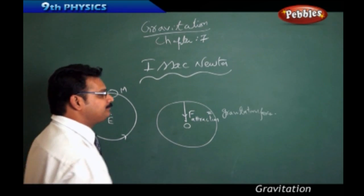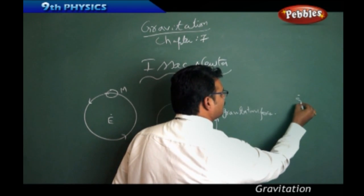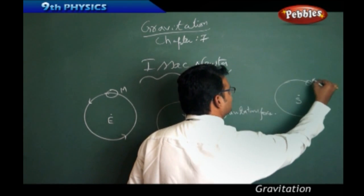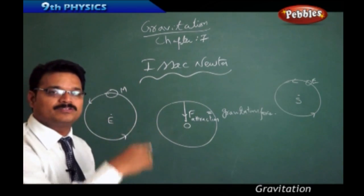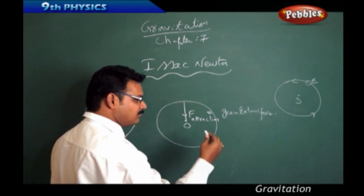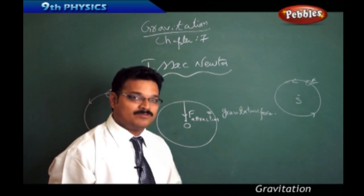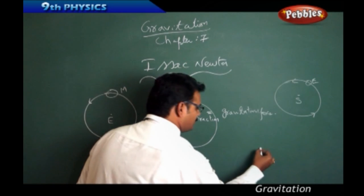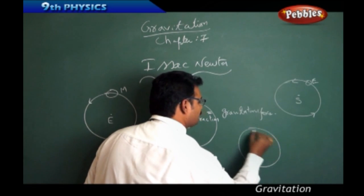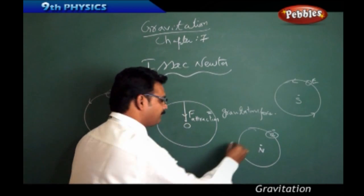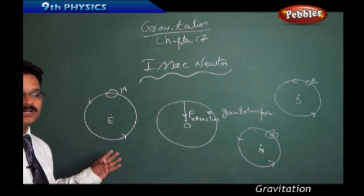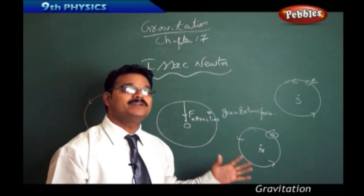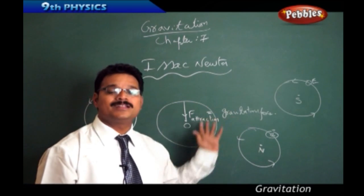Take another example: the sun as a center, with the planets revolving around it — one planet being our earth. The same question comes: why is the earth rotating round the sun? Take yet another example — go to the atoms. Inside the atom, we have electrons and a nucleus, and these electrons revolve round the nucleus, just like the moon revolves round the earth and the earth moves round the sun. So, what are the factors making all these bodies rotate around another massive body?